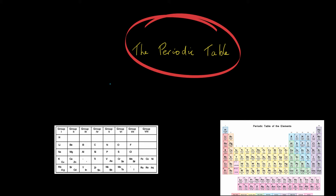Before the 1800s, there was no periodic table. We knew that there were different elements, but there was no grouping system for them. We couldn't look up new elements as they were discovered because there was no way of collecting them together, and this meant that progress was very slow.